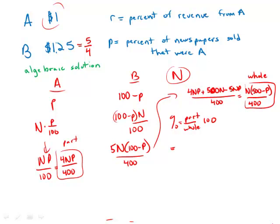So that is the part, 4NP over 400, over the whole, N times 500 minus P over 400, times 100.